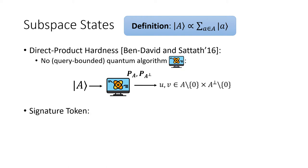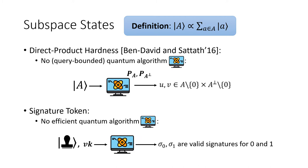The direct product hardness naturally gives the construction of signature tokens. A signature token scheme is similar to a signature scheme, except a user is given a quantum signing token instead of a classical signing key. Moreover, the token should be a one-time token — a person with a signing key can generate a signing token and delegate the signing task to someone else. This signing token can be used to sign an arbitrary message, but only once. For convenience, we only consider 1-bit messages.